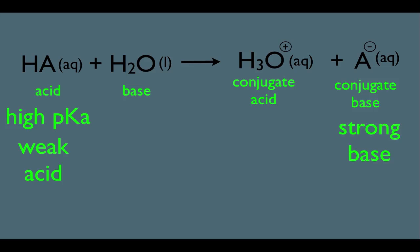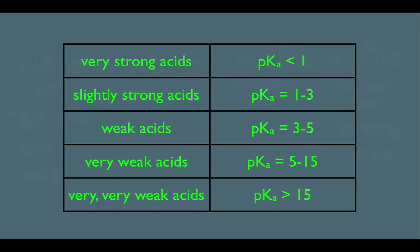Now, I'd like you to have a general idea of what it means to be strong or weak concerning acids. For instance, very strong acids have pKa values less than 1. Slightly strong acids have a pKa around 1 to 3, whereas weak acids officially are in between the 3 to 5 mark, very weak acids we're talking 5 to 15, and extremely weak acids have a pKa greater than 15.